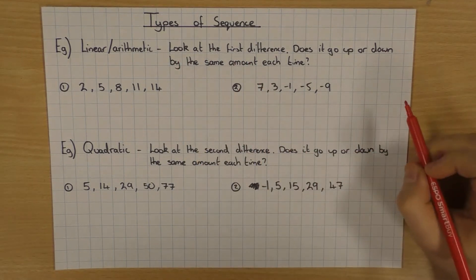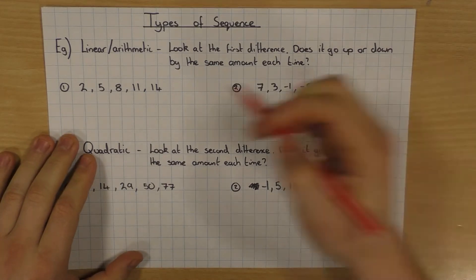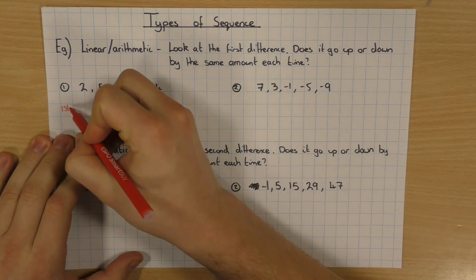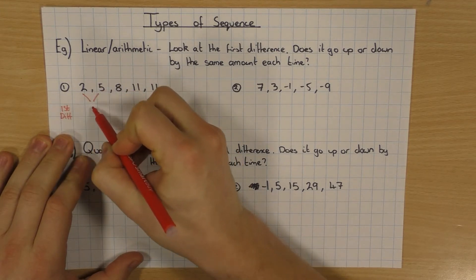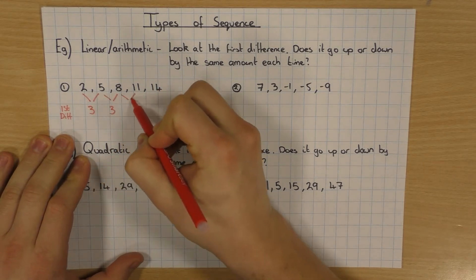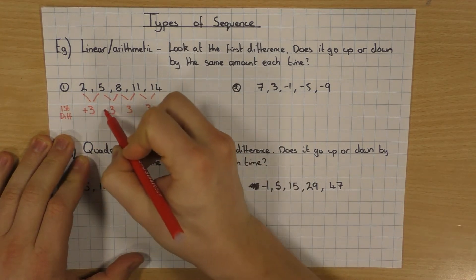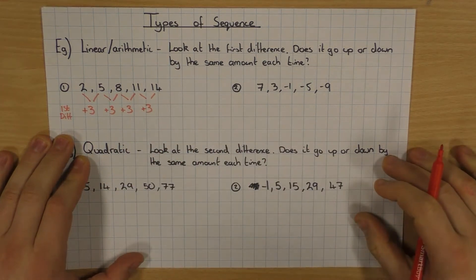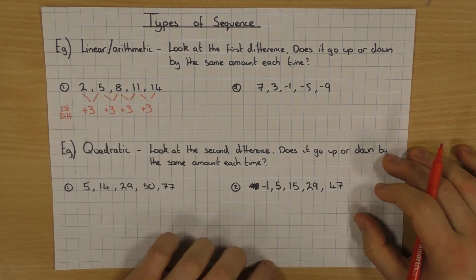If you look at the first difference, it always goes up or down by the same amount each time. So if we have a look at this first one here, I'm going to look at the first difference between each number. Between 2 and 5 the difference is 3. Between 5 and 8 the difference is 3. 8 and 11 it's 3. And 11 and 14 it's 3. Or maybe I should be more specific here and say plus 3 each time. So that sequence is going up in 3's every single time. So it's definitely going to be a linear sequence. And that's how you can spot it.